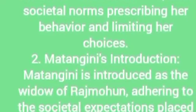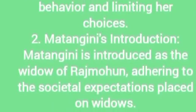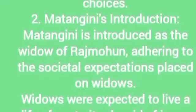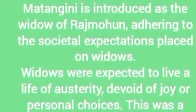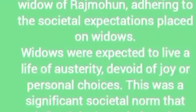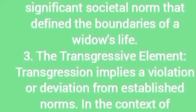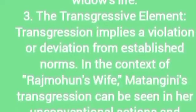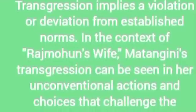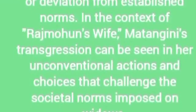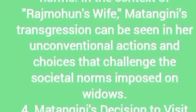Matangini's Introduction: Matangini is introduced as the widow of Rajmohan, adhering to the societal expectations placed on widows. Widows were expected to live a life of austerity, devoid of joy or personal choices. This was a significant societal norm that defined the boundaries of a widow's life. Transgression implies a violation or deviation from established norms. In the context of Rajmohan's Wife, Matangini's transgression can be seen in her unconventional actions and choices that challenge the societal norms imposed on widows.